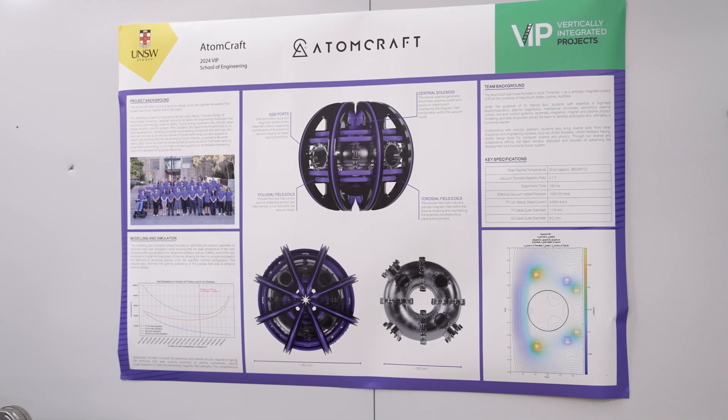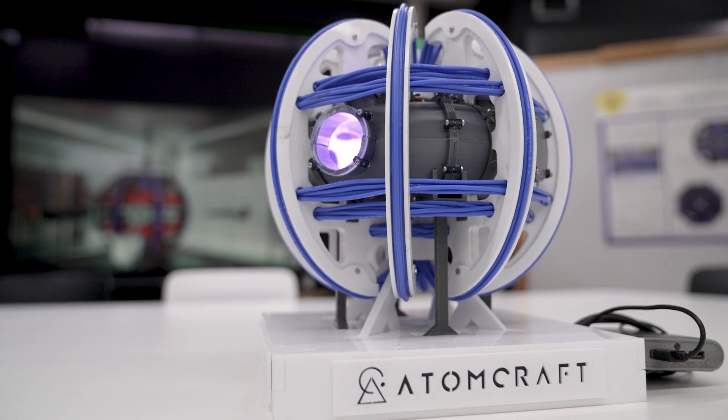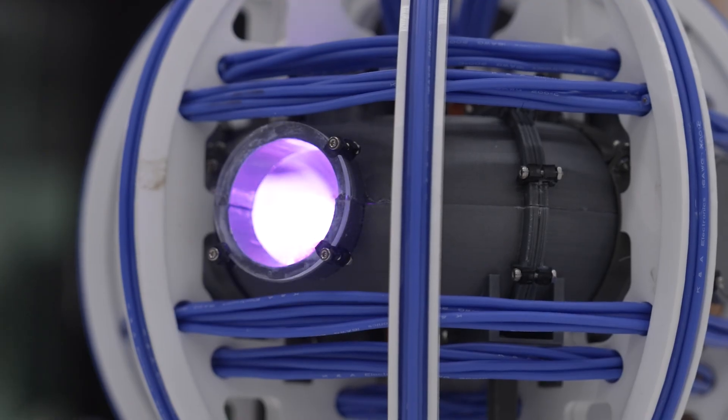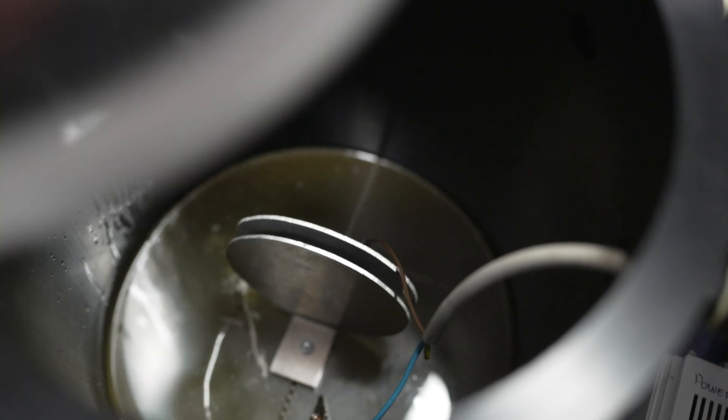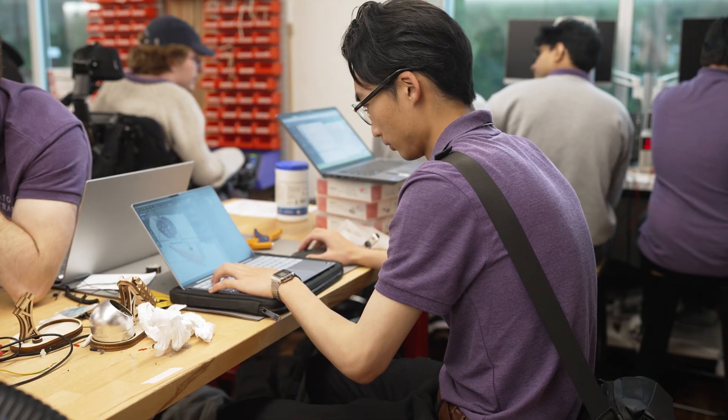So we're building a tokamak, which is probably the most mature form of a fusion device. It is a toroid, so a doughnut essentially. The exciting thing here is that it will be the first reactor that will be entirely built and designed by students. Of course, with guidance and supervision from us, but it's very much their project. We're here to help them, enable them, but it's their decisions fundamentally that will make this reactor theirs.